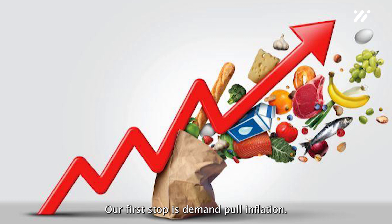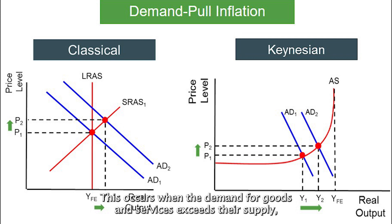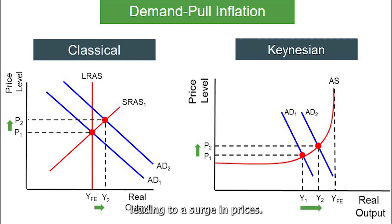Our first stop is demand-pull inflation. This occurs when the demand for goods and services exceeds their supply, leading to a surge in prices. It's like a bidding war, and consumers end up paying more for the same goods.